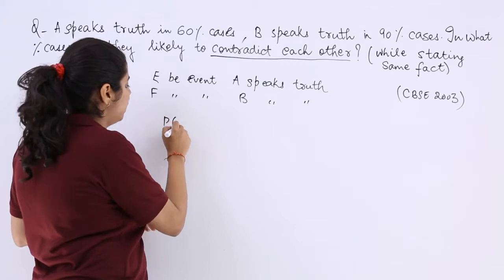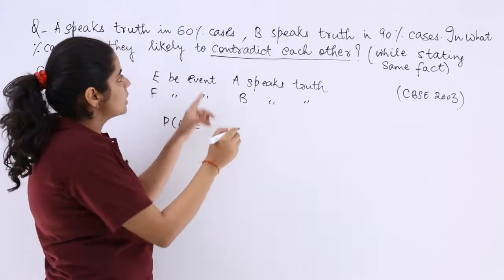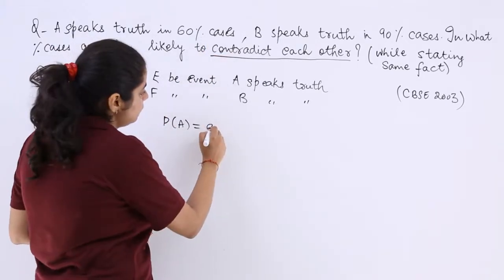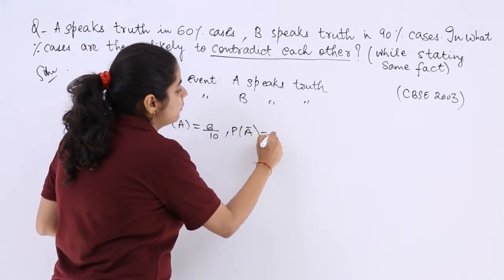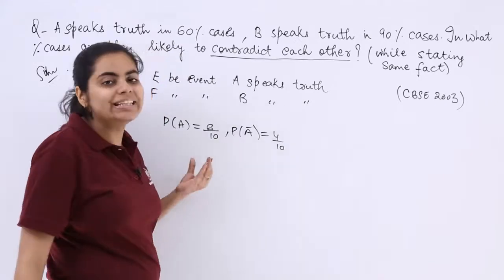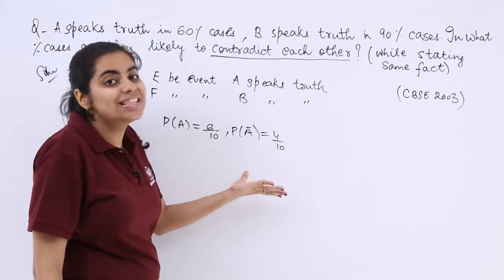So what is probability of A? 60% cases, 6 over 10. What is the probability of not A? 4 over 10. You can take it in decimal also. I am taking it as fractions to ease the calculation.